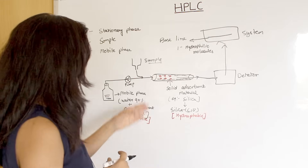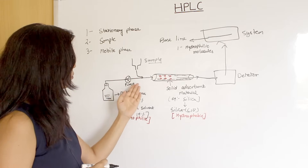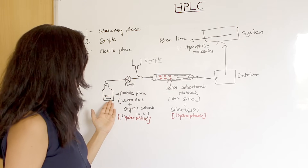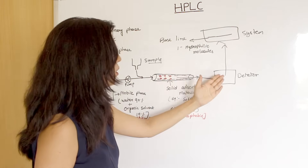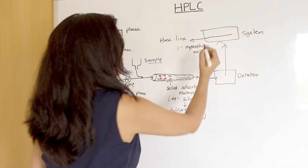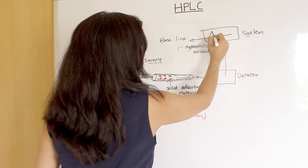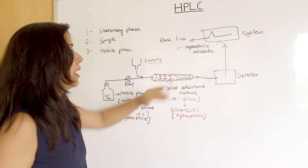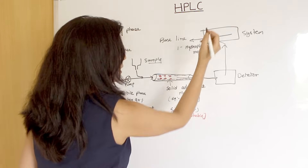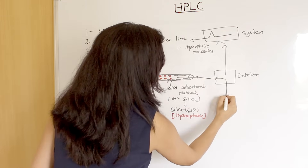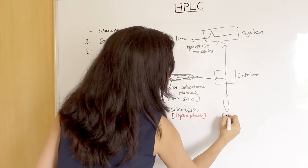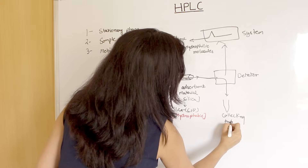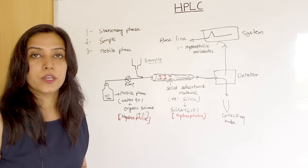Second step: the sample is loaded with the mobile phase. Our baseline is already on the system. Now when the sample and mobile phase are loaded onto the column, the hydrophilic components are detected at the detector and a peak is developed. This peak represents the hydrophilic molecules. The detector sends a signal, and the next attached collecting tube collects the first material from the column — which is the hydrophilic molecules.